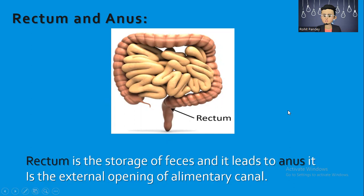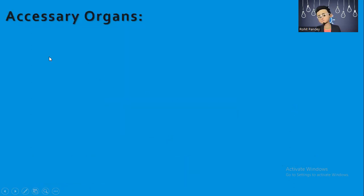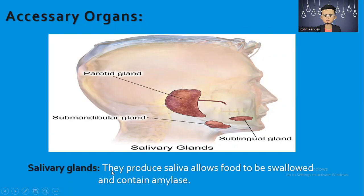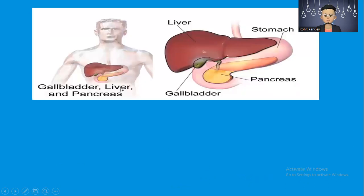Accessory organs: the salivary glands include the parotid gland, submandibular gland, and sublingual gland. They produce saliva, which allows food to be swallowed, and contains amylase. The gallbladder, liver, and pancreas are also accessory organs. Here you can see the liver, the green-colored gallbladder, the yellow pancreas, and the pink stomach.